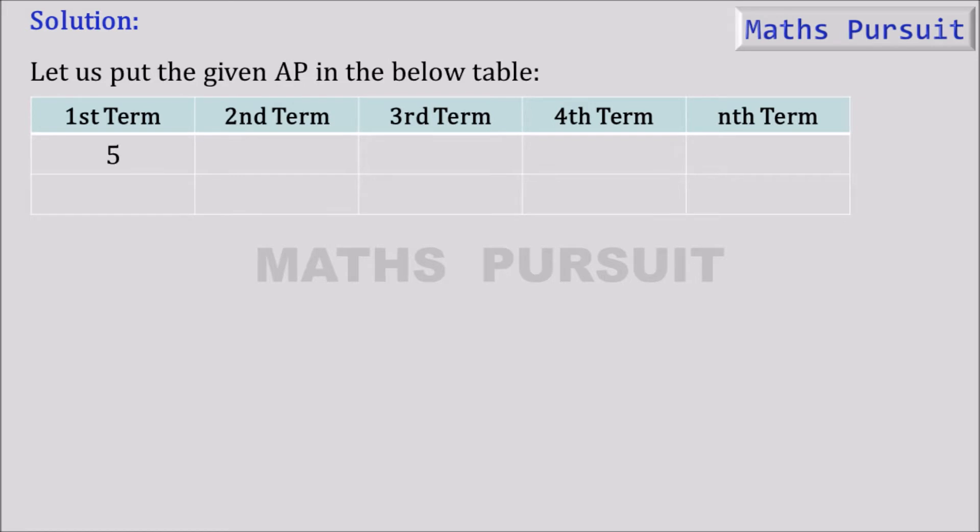Now putting 5 under first term, 11 under second term, 17 under third term, 23 under fourth term and 301 under nth term. Here we are assuming 301 is a value of the nth term but we don't know whether it is a value or not.